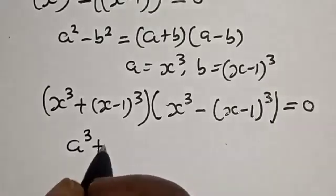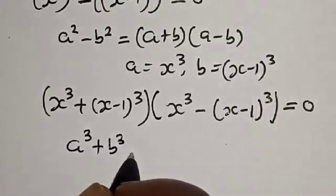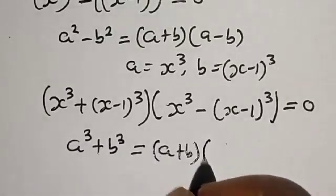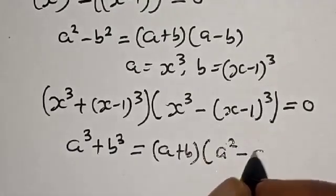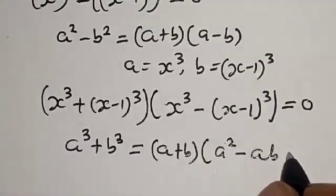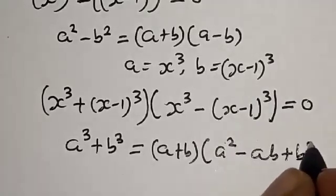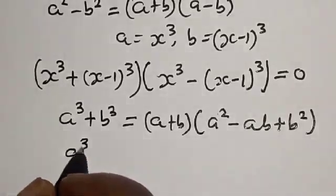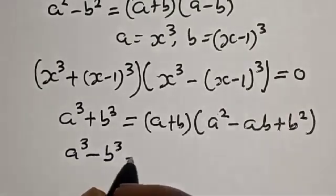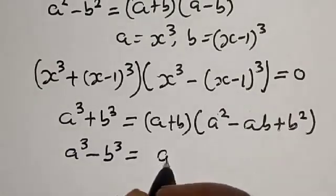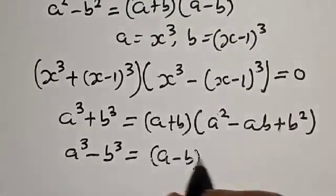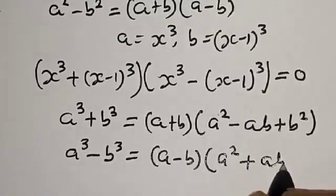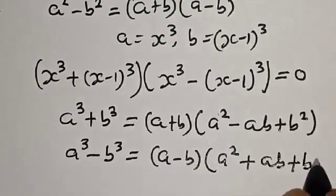Also take note of these rules: a cubed plus b cubed is equal to a plus b multiplied by a squared minus ab plus b squared; and a cubed minus b cubed is equal to a minus b multiplied by a squared plus ab plus b squared.